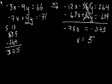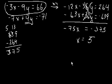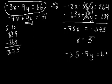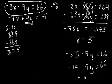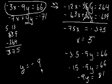So if x is 5, we just substitute back into, let's use this equation. So we get minus 3 times 5 minus 9y is equal to 66. So we get minus 15 minus 9y equals 66. Minus 9y is equal to 81. And then we get y is equal to minus 9. So the answer is 5 comma minus 9. I think you're ready to do some systems of equations now. Have fun.